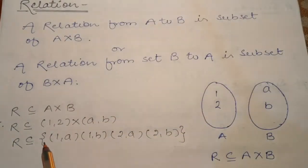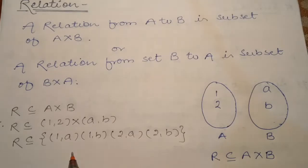The next thing is our relation. A relation from A to B is a subset of A cross B. If you want to find a relation from A to B, then you will find A cross B or the Cartesian product, and the relation will be a subset of it.